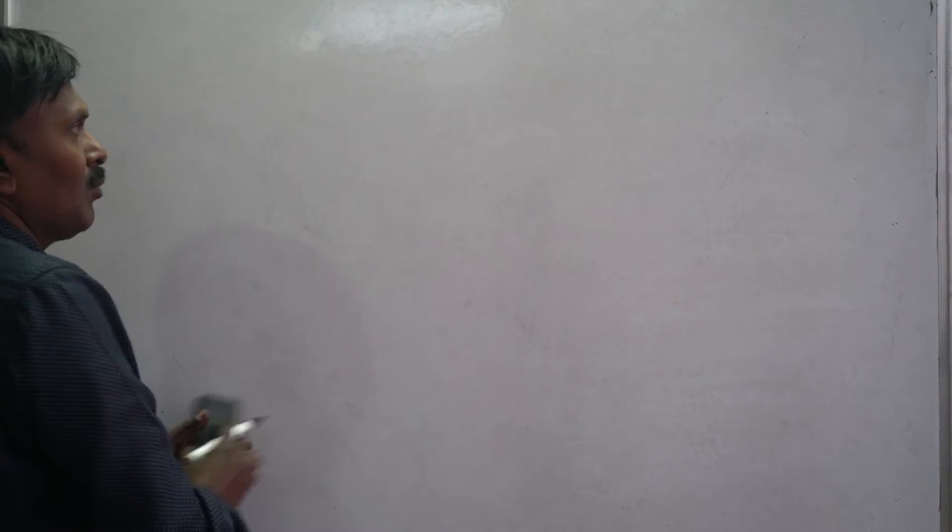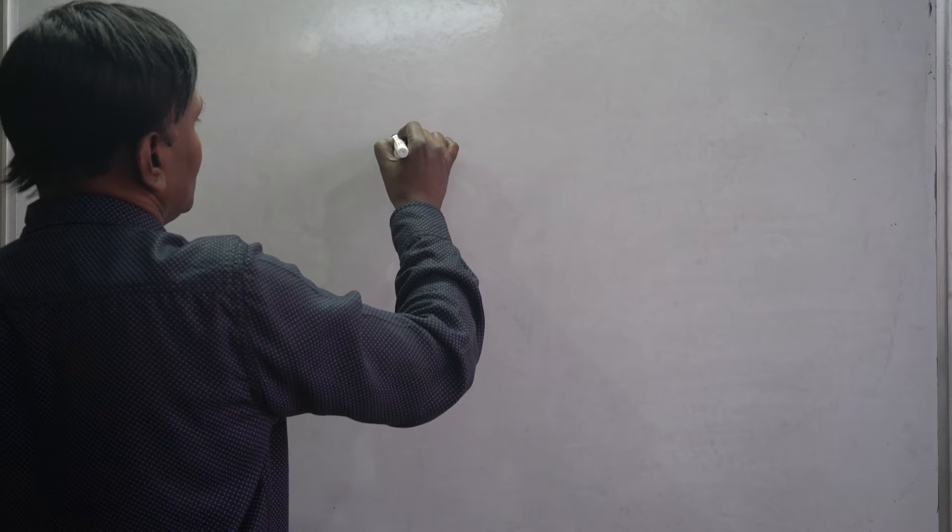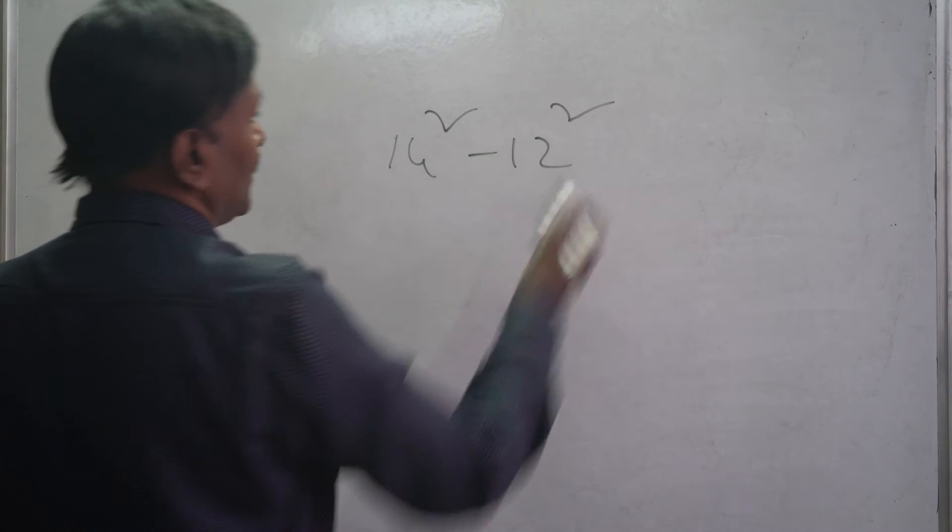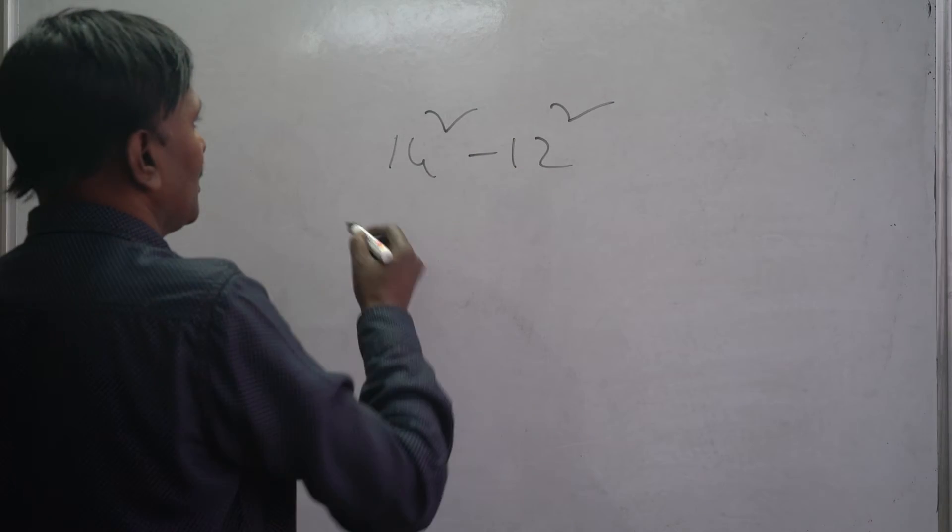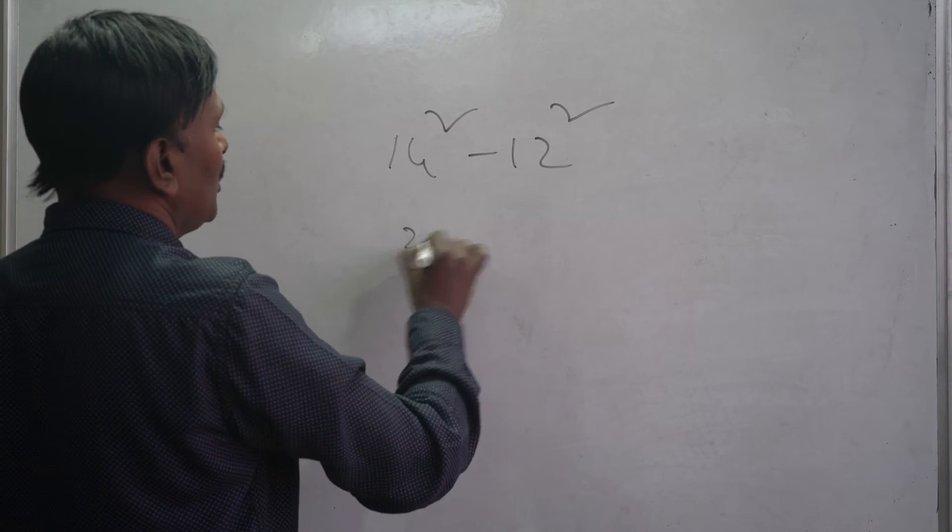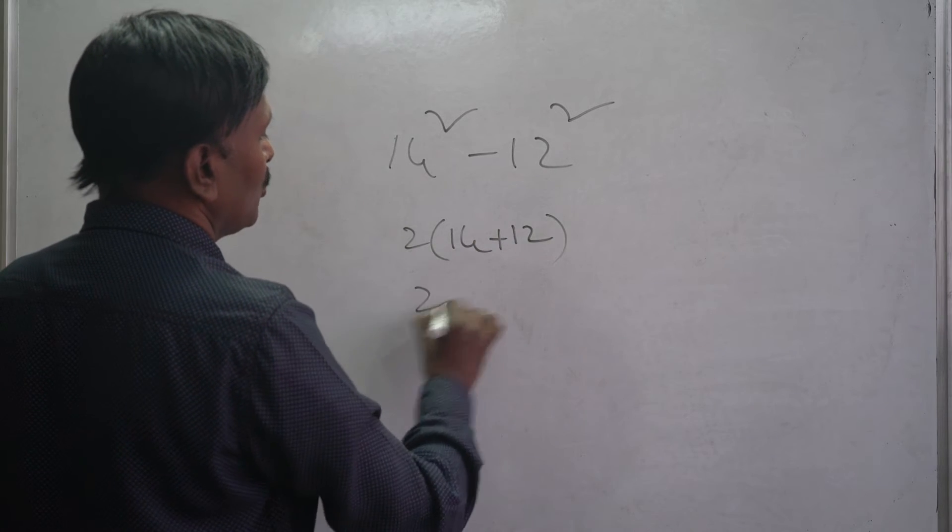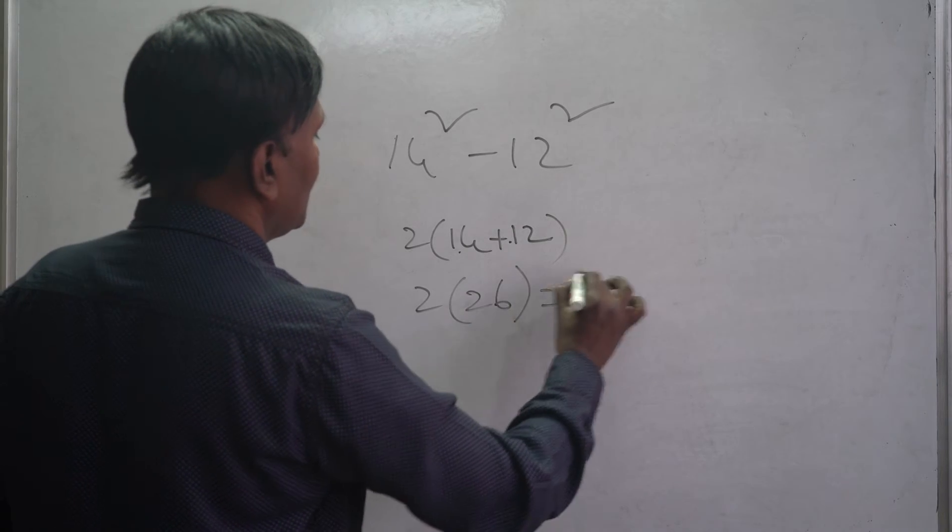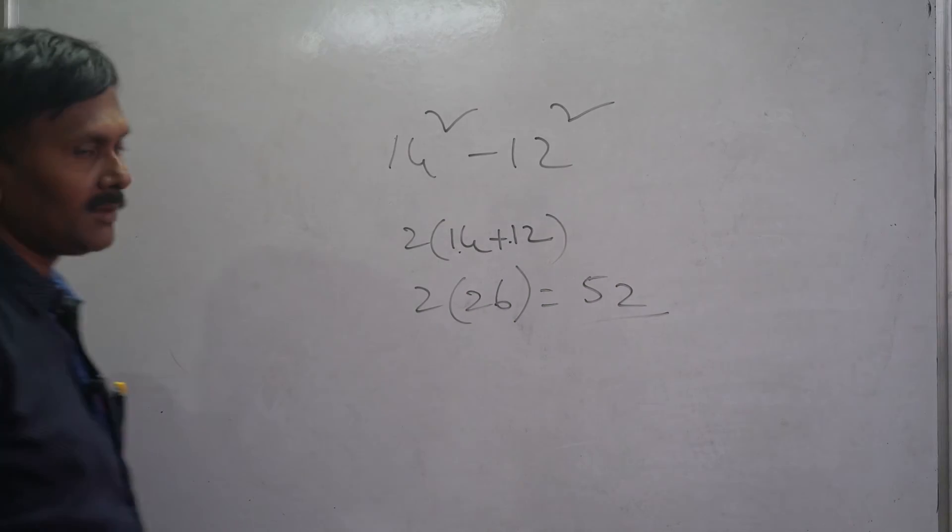We will see one more example. 14 square and 12 square. So here 2 into 14 plus 12. This is 2 into 26, this is 52.